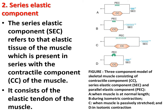The series elastic component refers to the elastic tissue of the muscle which is present in series with the contractile component of the muscle, and it consists of the elastic tendon of the muscle. In this figure, the series elastic component is the elastic tendon of the muscle, and the contractile component consists of actin and myosin filaments.